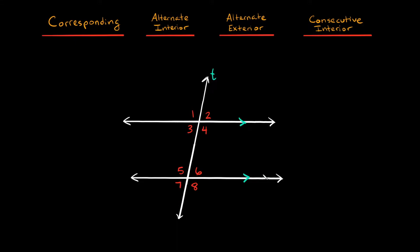So when we have two parallel lines like this intersected by a transversal, it does some pretty neat stuff for us, because we can start relating some of these angles over here to some of these angles over here. So first, let's start with corresponding angles. Corresponding angles are just angles in similar positions. So for example, this two right here is in the top right, and down here, you can see the six is also in the top right. So those are corresponding angles.